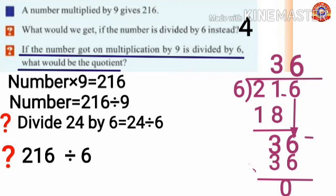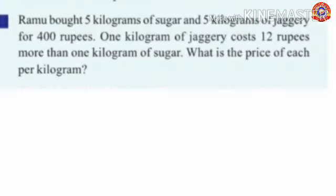Next question: Ramo bought 5 kilograms of sugar and 5 kilograms of jaggery for 400 rupees. 1 kilogram of jaggery costs 12 rupees more than 1 kilogram of sugar. What is the price of each per kilogram?